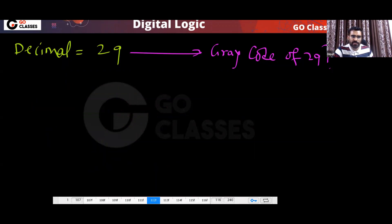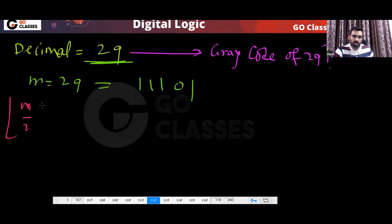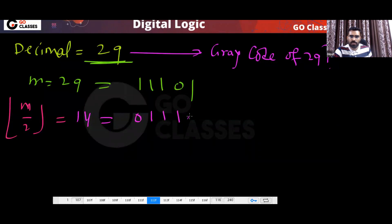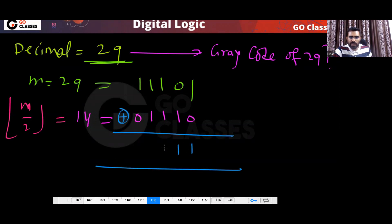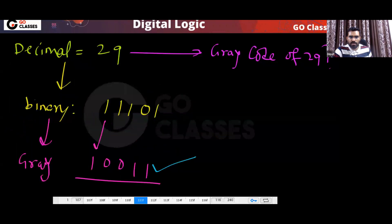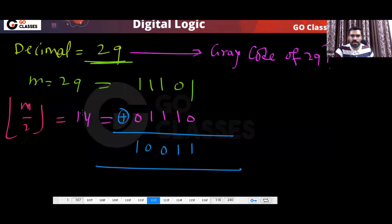Another way: this is your M, which is 1,1,1,0,1. Now you also find M divided by 2. M divided by 2 is 14, which is 0,1,1,1,0. Now you take their bitwise XOR. So you will get 1,1,0,0,1 — the same answer. This is clear.